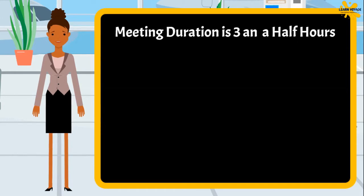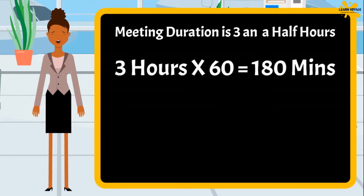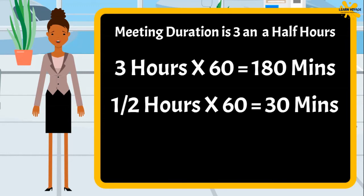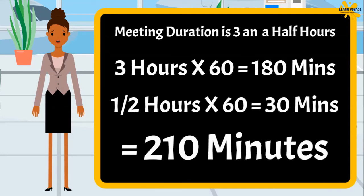Here we will calculate 3 hours and half an hour separately. So 3 multiplied by 60 gives us 180, and half multiplied by 60 gives us 30. When we add both values, you should get 210 minutes.